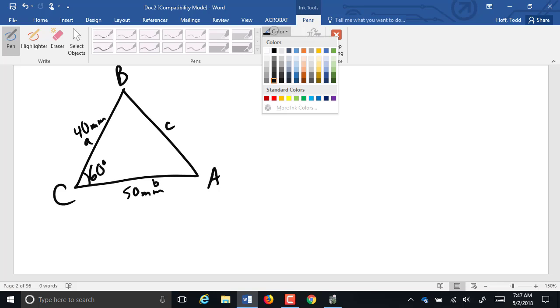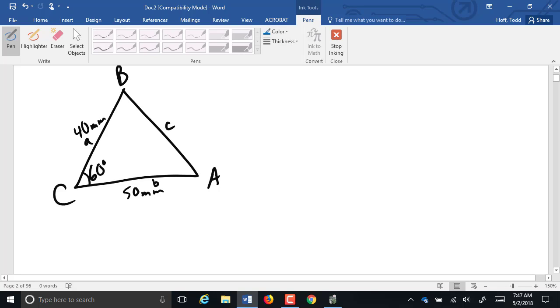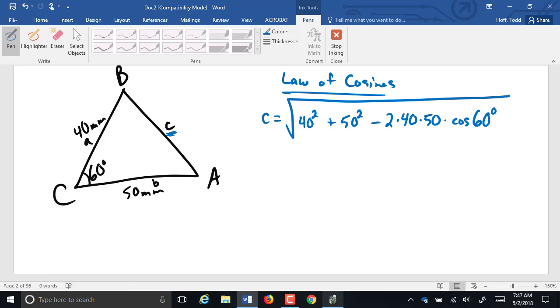When we had a setup like this before, where we had two sides and the angle in between them, we could find that angle there using the law of cosines. So C equals the square root of A squared, which is 40 squared, plus B squared, which is 50 squared, minus 2 times 40 times 50 times the cosine of angle C, which is 60 degrees.